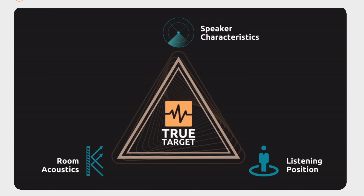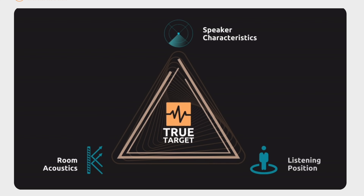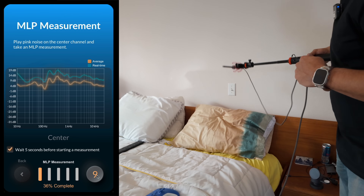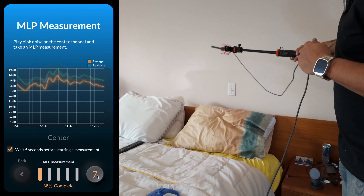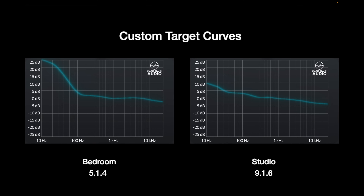How does it know all of this? Instead of taking one measurement at the main listening position, it takes a near-field measurement of the speaker to get an idea of what the speaker is capable of. Then it takes a measurement of that speaker at the main listening position, and the app can determine what the room is doing to the sound as it travels from the speaker to the main listening position. With that information, it can create a custom target curve specifically for your room.